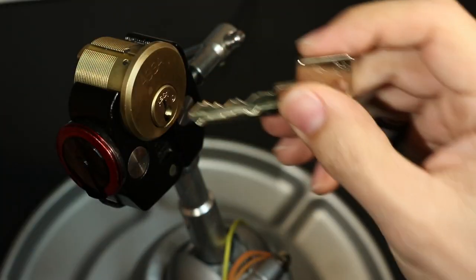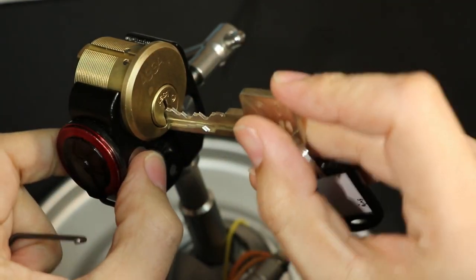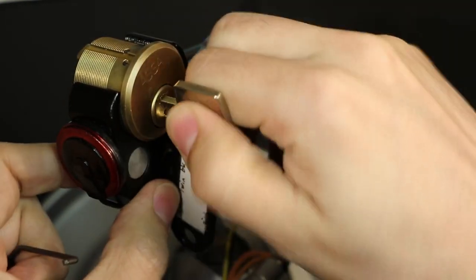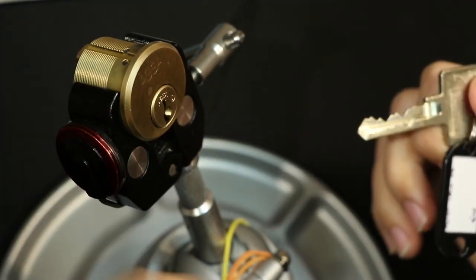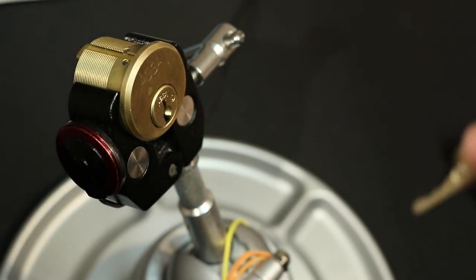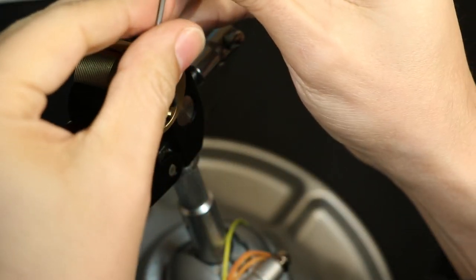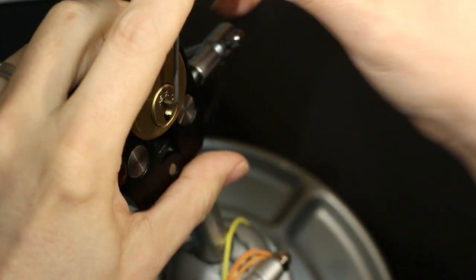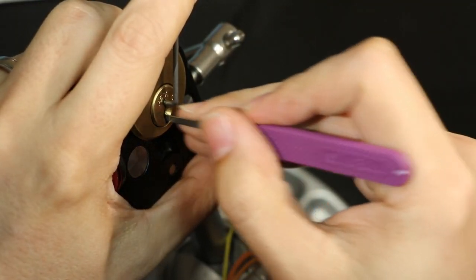I don't know if I showed this, it has six top pins that have gin spool drivers that are all going into matching counter milling in the plug, and these five sidebar pins that have false gates on them. I haven't gutted this yet, so I'm just assuming everything's correct in there, but we'll see.